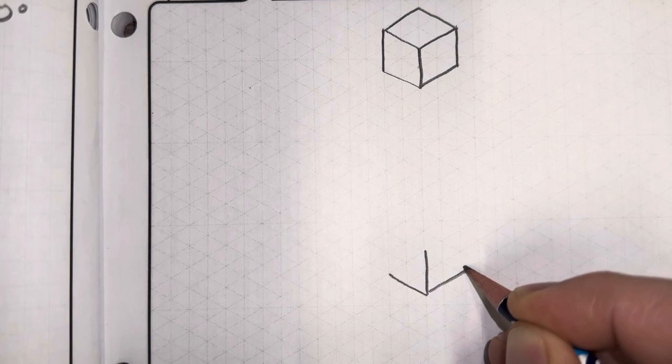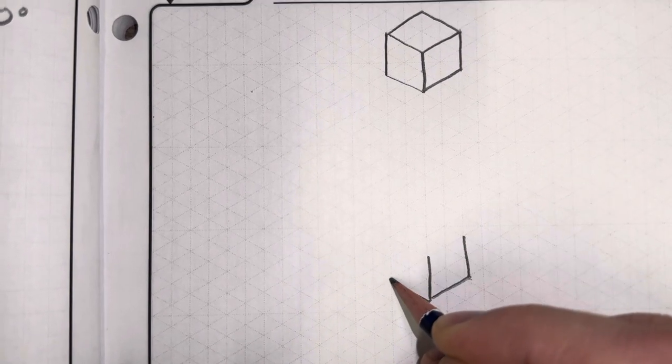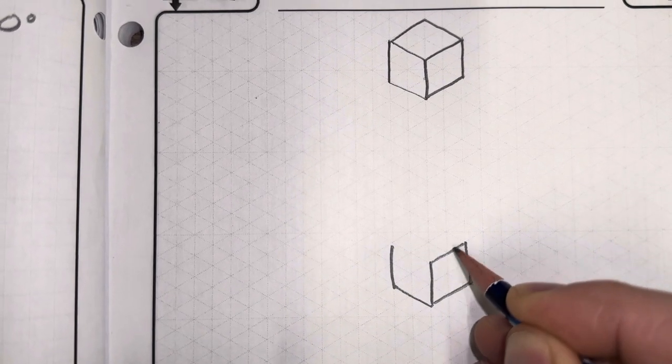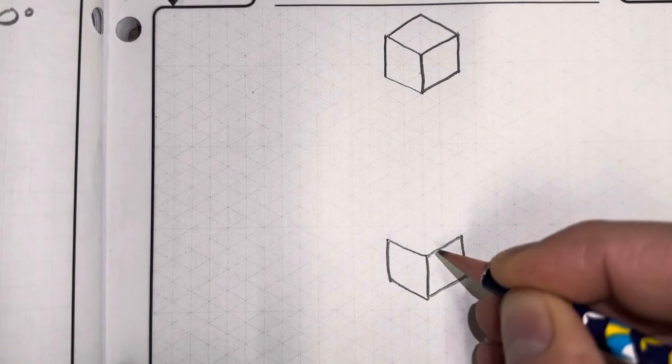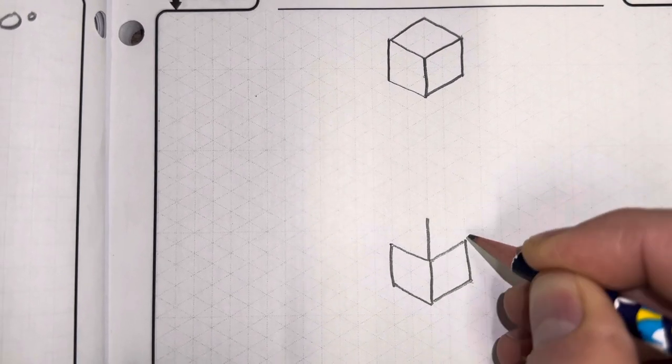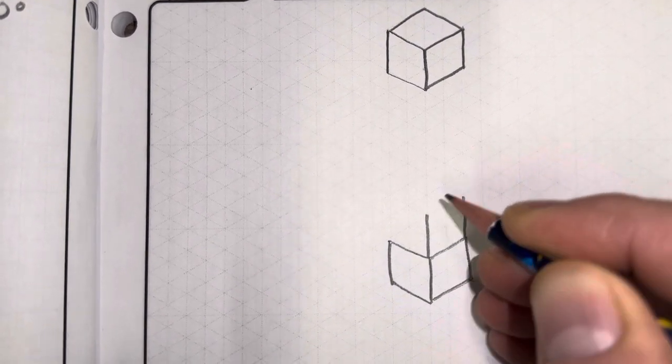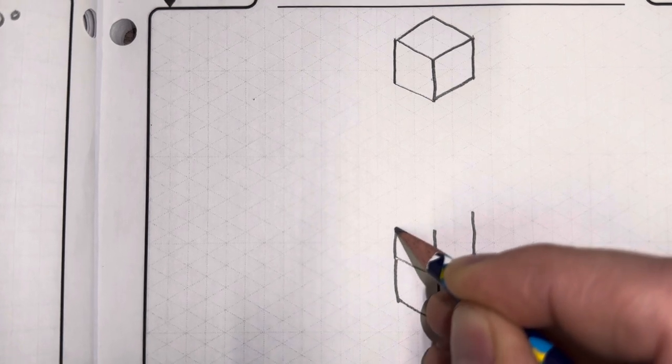So I'm going to go those two lines again, up two, over two. But instead of making my top on this one, I'm going to extend up. So I'm going to go up two at each of those points.